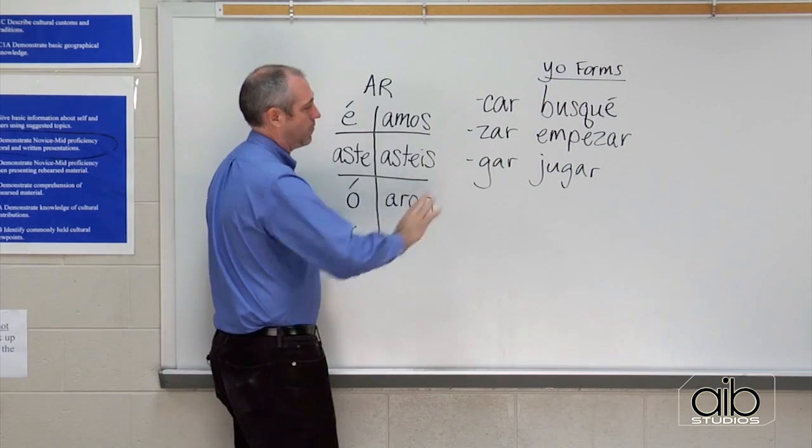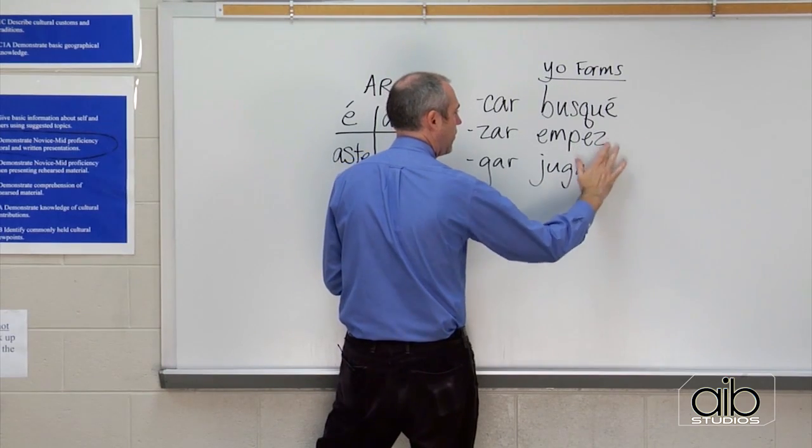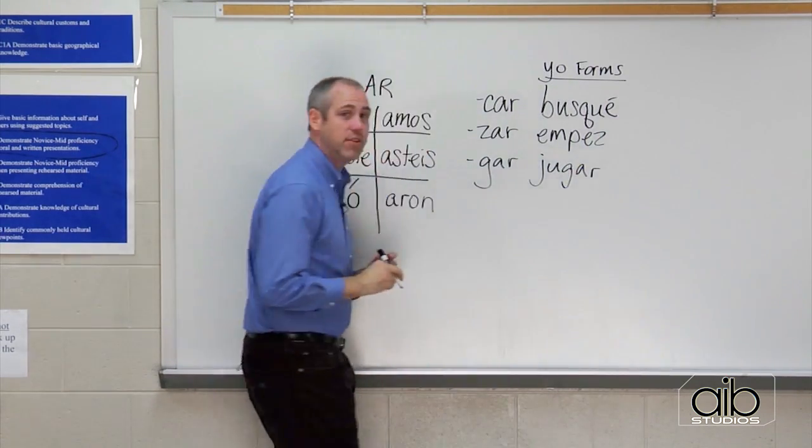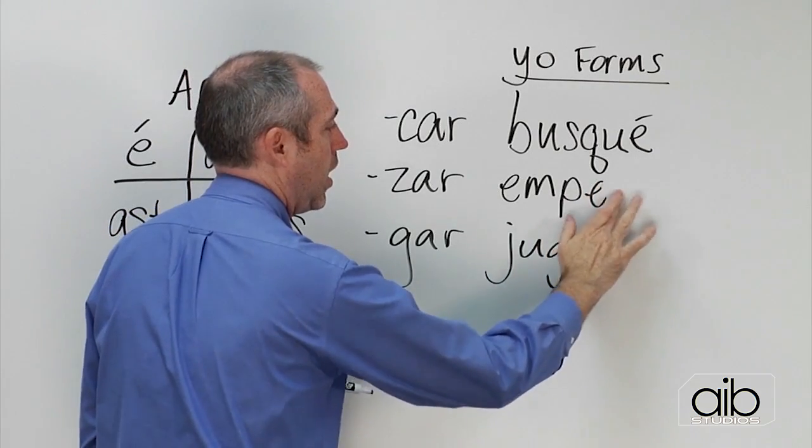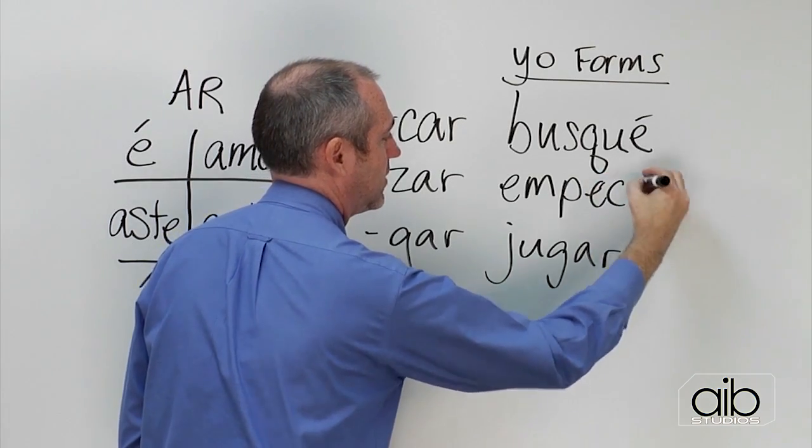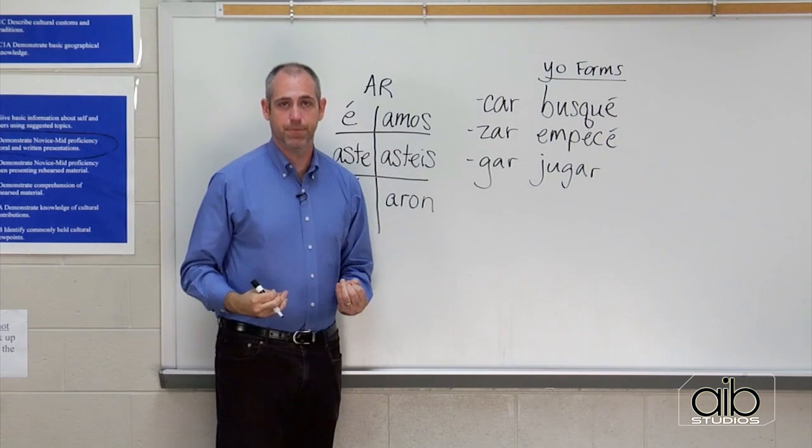Now, let's look at Z-A-R verbs, we're going to make a little modification here too. Normally, you think we just take off the A-R and we put the é with the accent. Well, what we're going to have to do is change this Z to a C. Empecé. I began yo empecé.